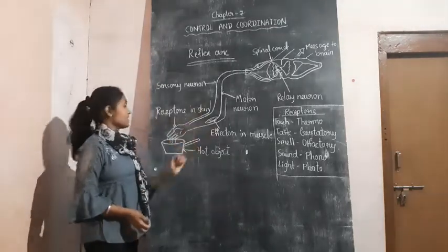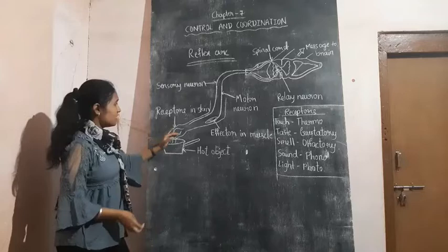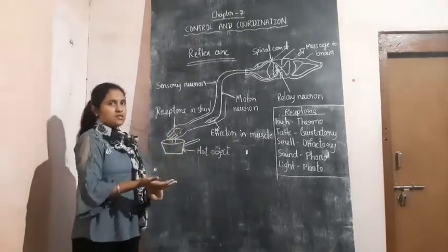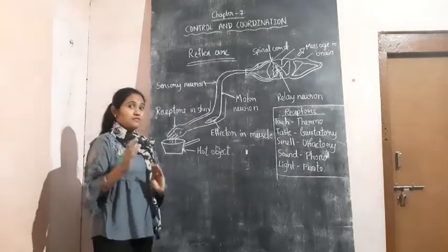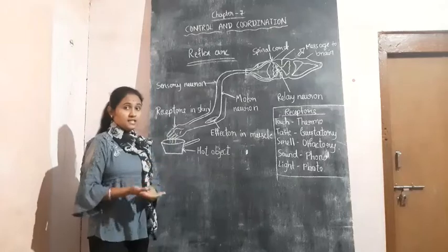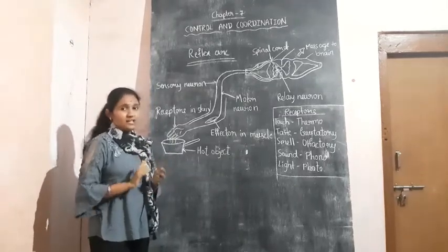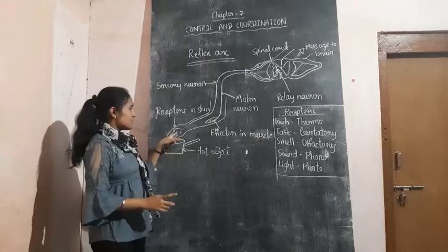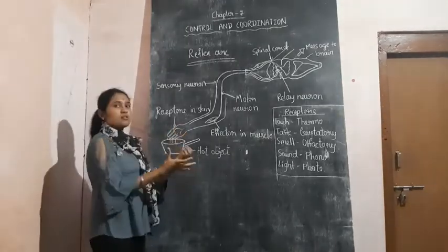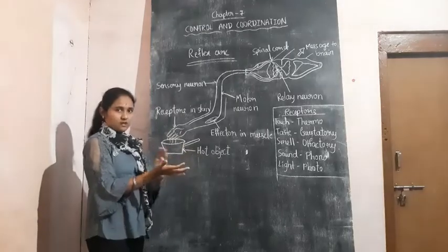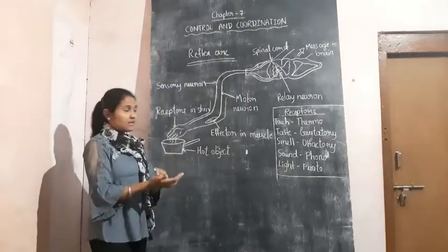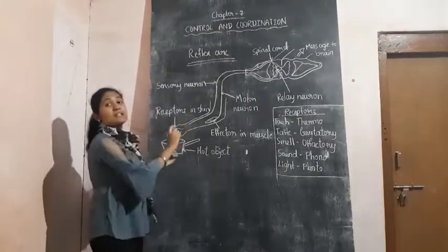Now let us see how the process takes place. In our hand, sensory organs are present. You know the five sensory organs in our body — that is skin, eye, nose, ear, and tongue. Skin is present in our hand, and it is one of the sensory organs. The neurons present in our skin and in our hand are known as receptors — the part of our body which is in contact with the outer stimulus.